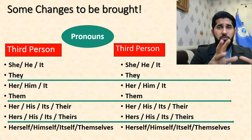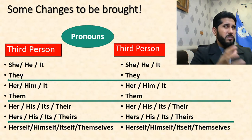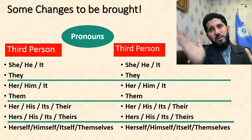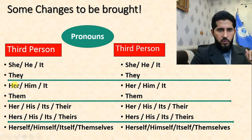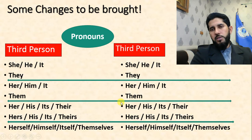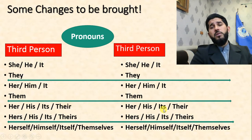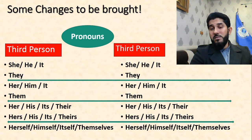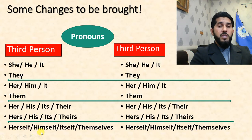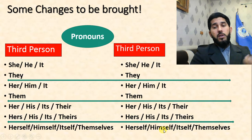Third person pronouns remain the same — no change. If you have third person personal pronouns in your direct speech and you want to change it to indirect speech, they remain in the same form. He, she, it, they stay the same in subjective, objective, possessive adjective, possessive pronoun, and reflexive pronoun forms.